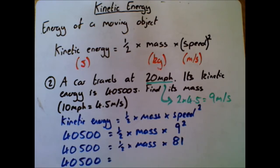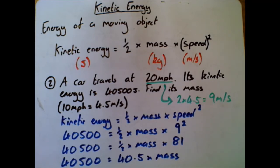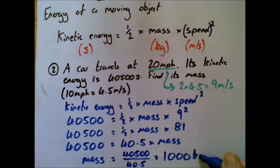So 40,500 equals mass - we don't know - but half times 81, that's 40.5 times the mass. So that means then that mass - we divide both sides by 40.5 - is going to be 40,500 divided by 40.5, and hopefully you can work out quite easily, but that equals 1000 kilograms. Again, do our reality check: a car, 1000 kilograms, that's one ton - yes, that is sensible.